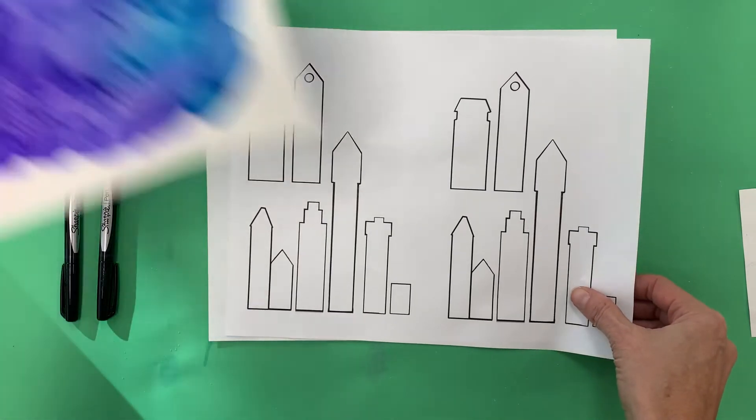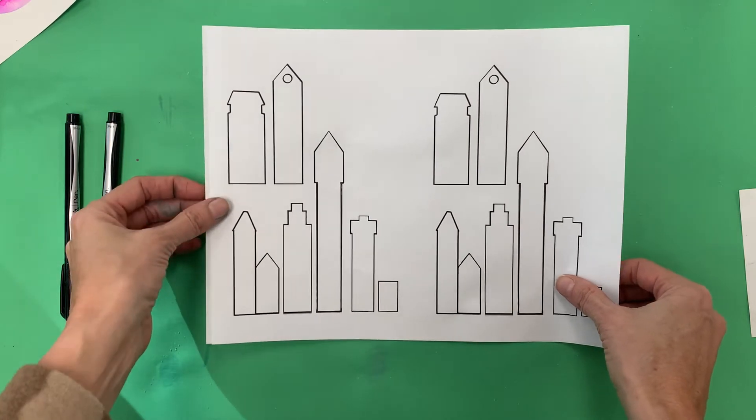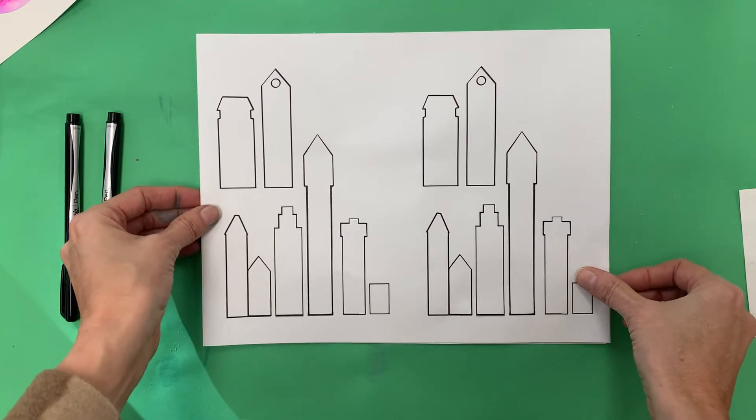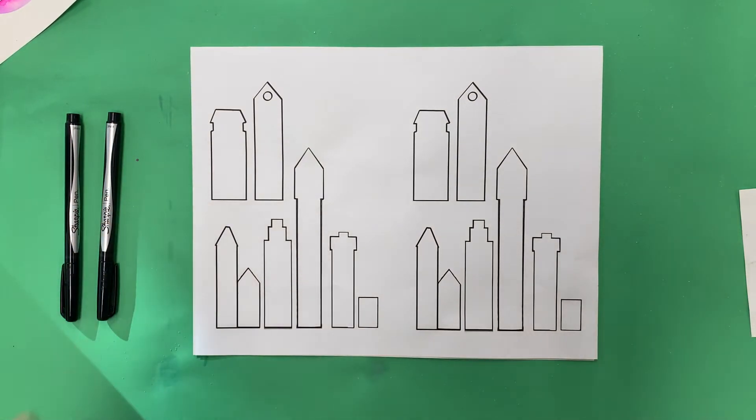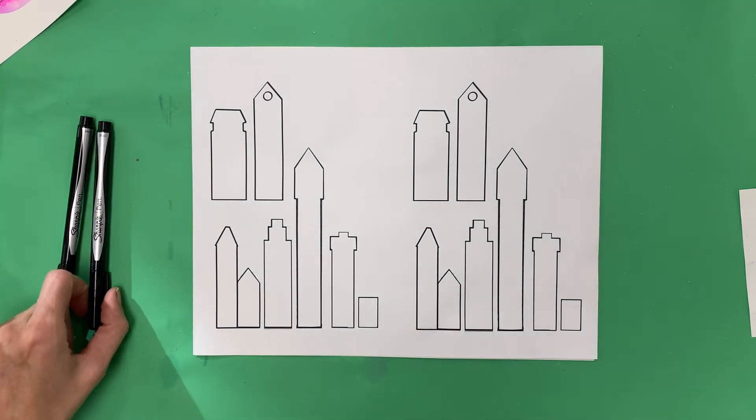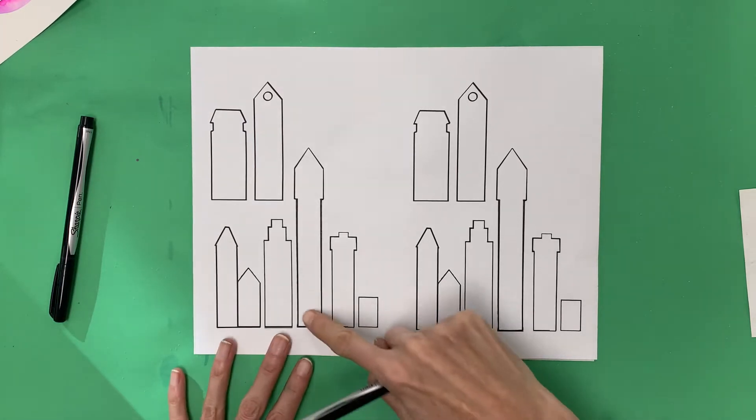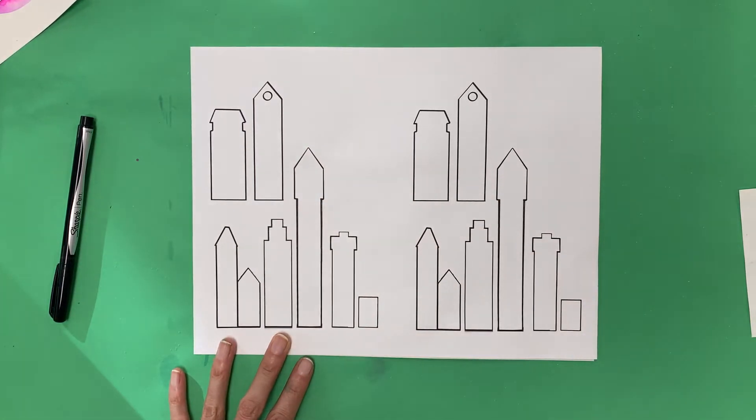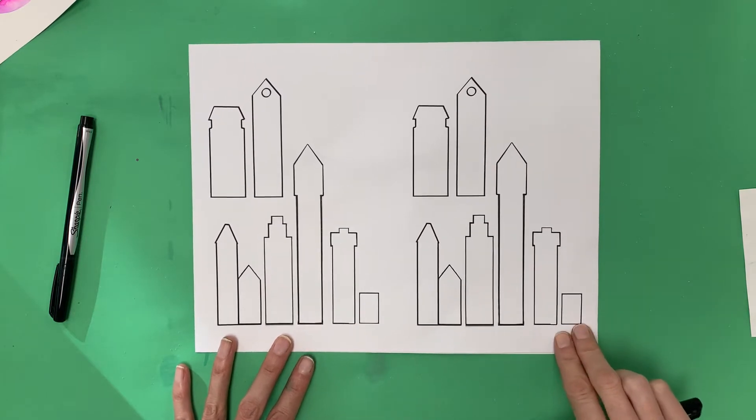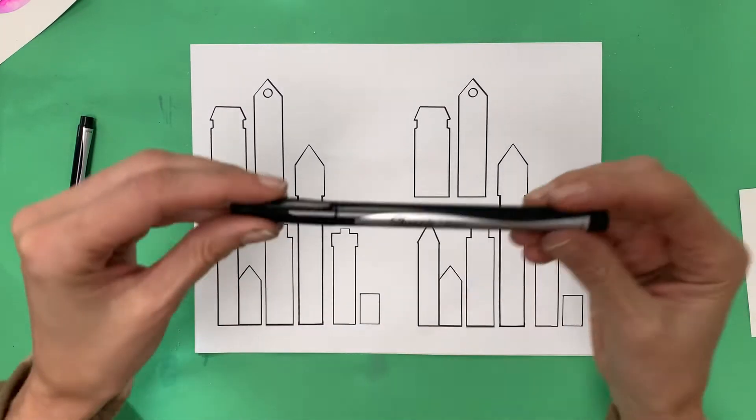What we're gonna do is later on we're gonna take these buildings and put them on top of this background, but first we need to add some detail. I've given you this as a template so you can start to add things to it to make it look more interesting, more like buildings. If you want to go ahead and draw your own buildings and draw your own shapes, you could do that too. I just wanted to make it a little bit easier for you by giving you these shapes.